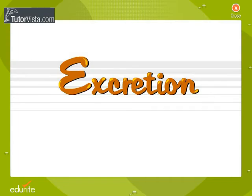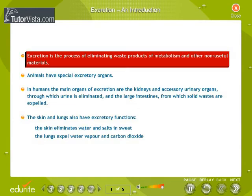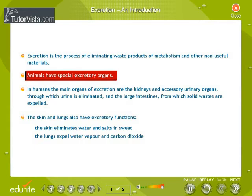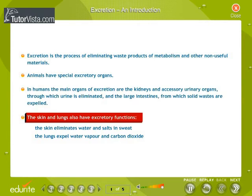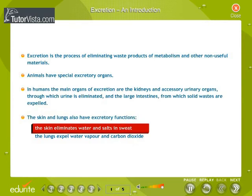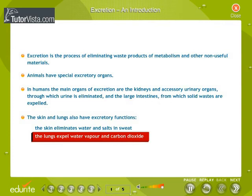Excretion – An Introduction. Excretion is the process of eliminating waste products of metabolism and other non-useful materials. Animals have special excretory organs. In humans, the main organs of excretion are the kidneys and accessory urinary organs through which urine is eliminated, and the large intestines from which solid wastes are expelled. The skin and lungs also have excretory functions. The skin eliminates water and salts in sweat, and the lungs expel water vapor and carbon dioxide.